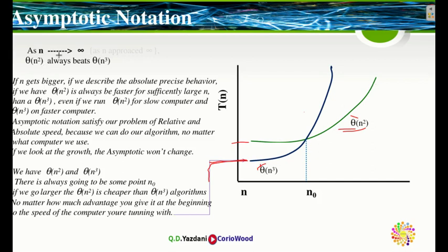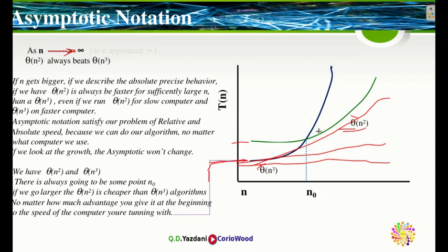As n approaches infinity, theta(n²) always beats theta(n³). Going back a few videos, we saw the growth rate hierarchy: we had n², n³, then our other speeds — absolute speeds, log n, linear, quadratic, cubic, factorial, and exponential. Theta(n²) is always going to beat theta(n³) as inputs grow large.